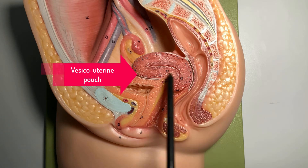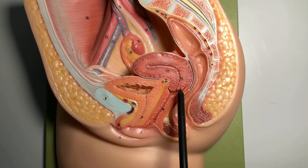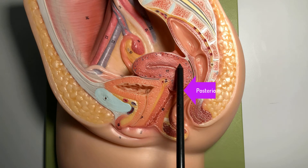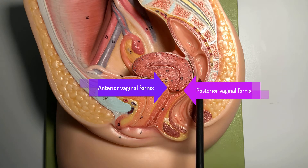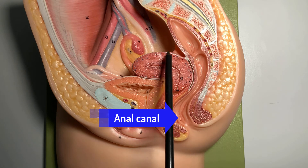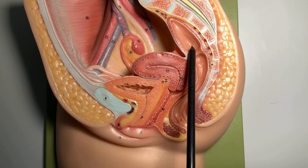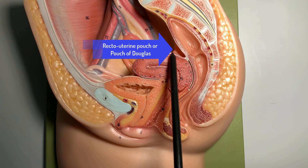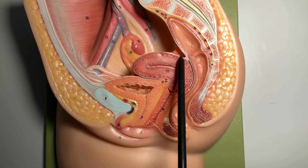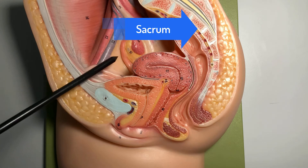The uterus is flexed here, and it opens into the lower part called the cervix, which opens into the vagina below. Behind the uterus is the rectum, which becomes the anal canal and then the anus. There is a pouch behind the uterus and in front of the rectum — we call it the recto-uterine pouch, or pouch of Douglas — which has significant clinical correlation.